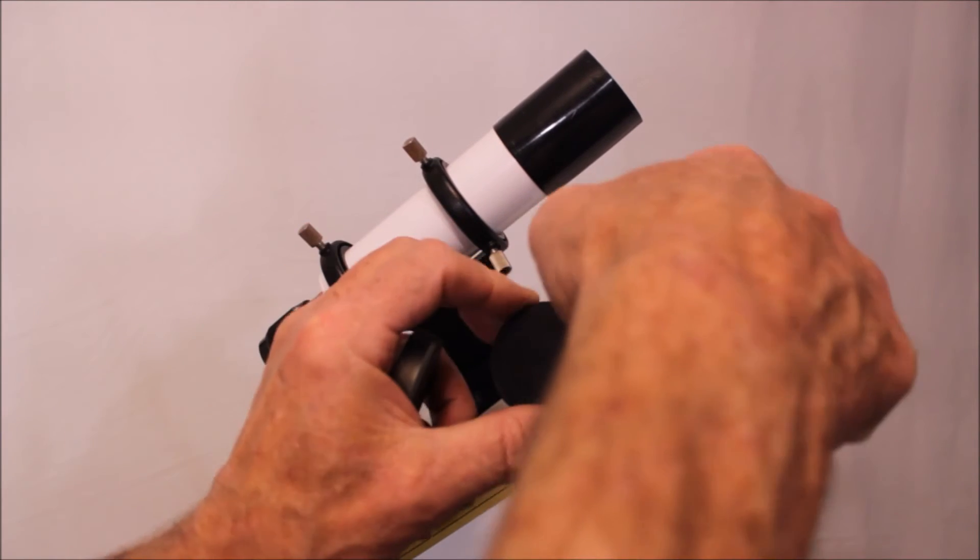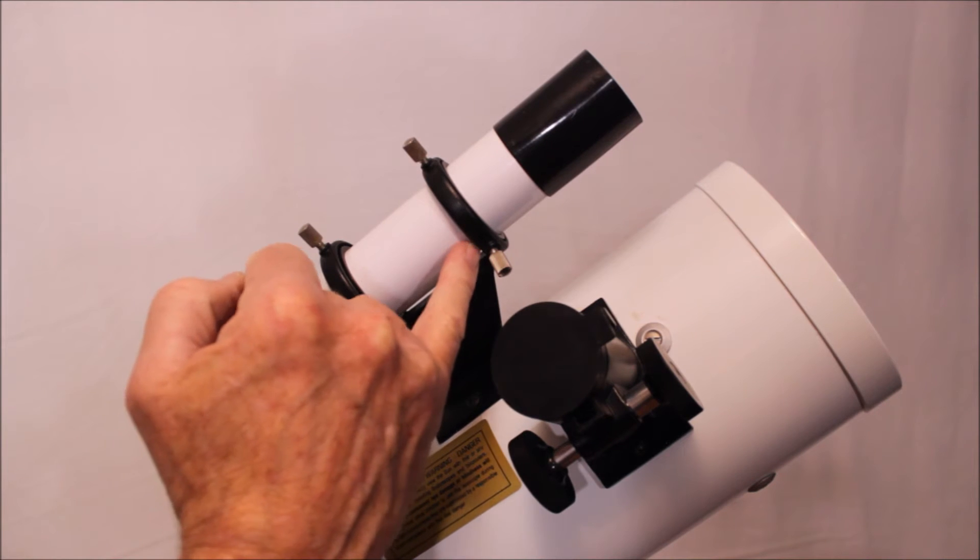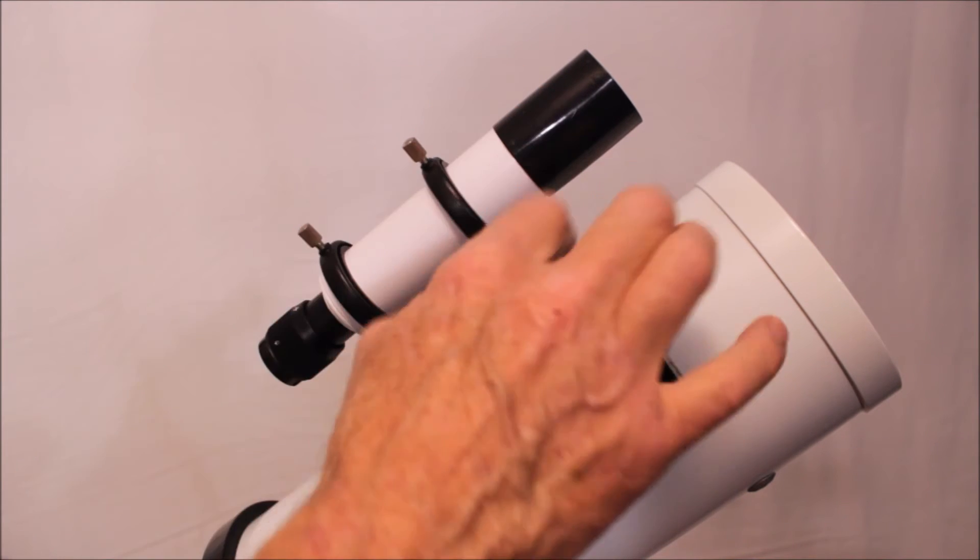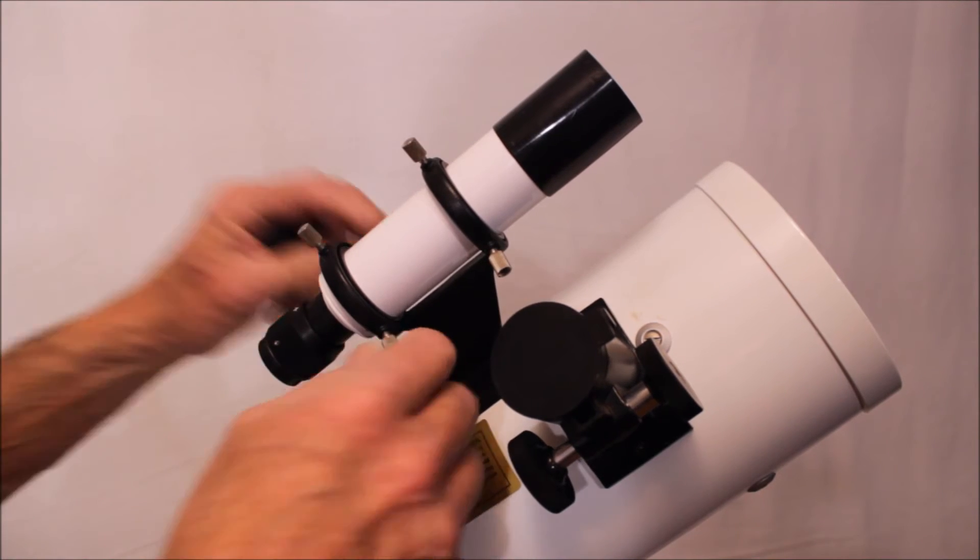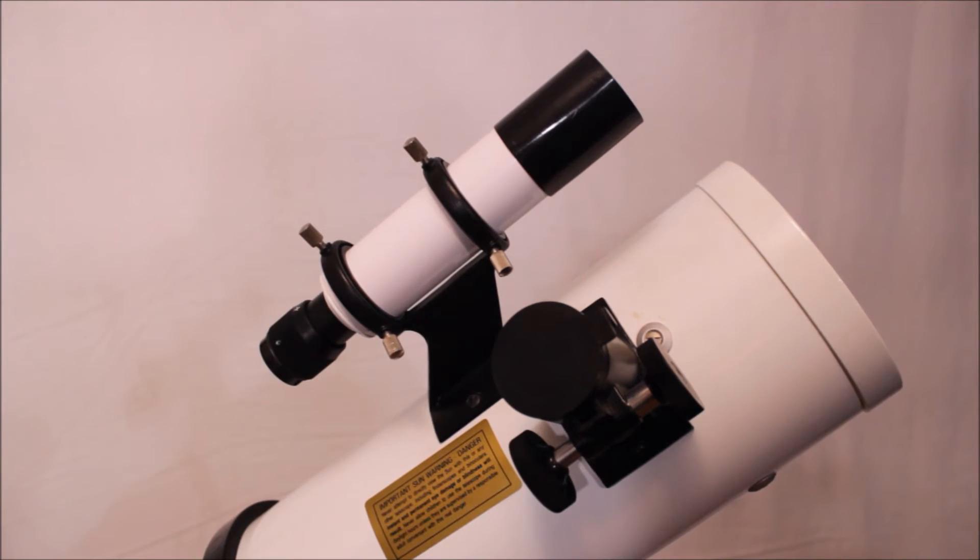This is all very strong, very robust - that's a thick hunk of aluminum there to hold your eyepieces. Another interesting thing about this finder is it has protective rings to protect the finish of the finder. Not many finders that I've seen do that - I think Unitron is the only one. You can lock these down and not mar the lovely white paint.